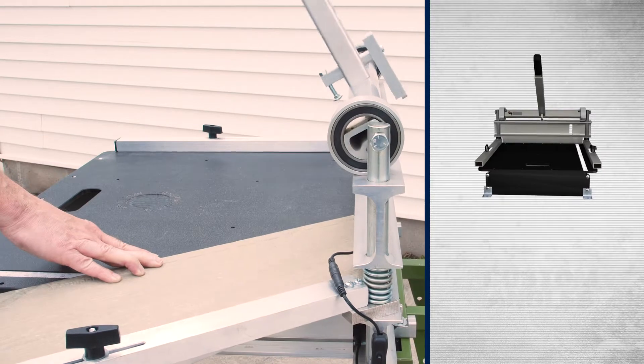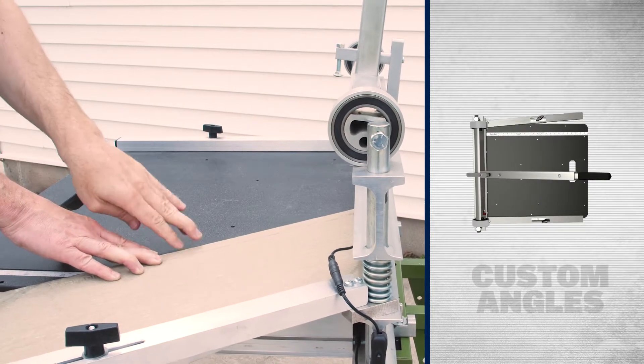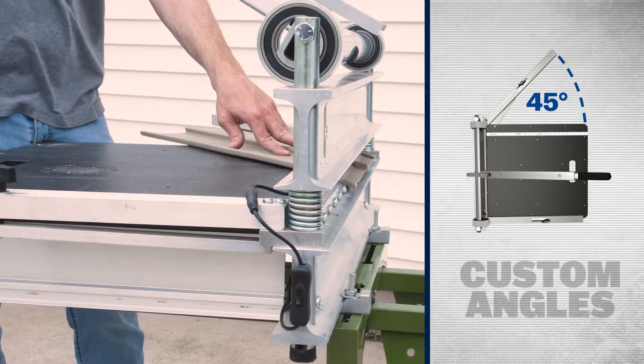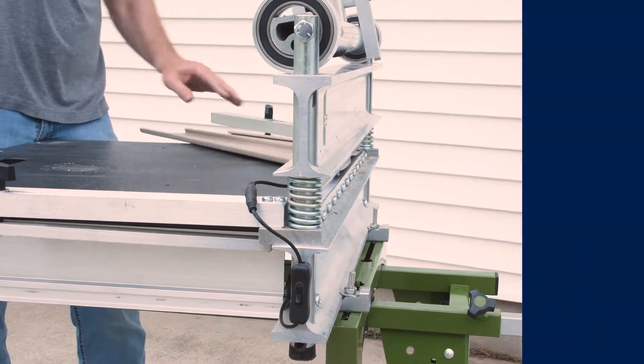Each siding shear comes with an adjustable fence that allows for up to 45 and 90 degree cuts on your next siding project, ensuring you have the right piece.